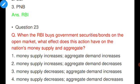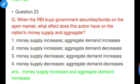Question number twenty-three: When the RBI buys government securities and bonds on the open market, what effect does this have on the nation's money supply and aggregate demand? Options include: money supply increases and aggregate demand increases; money supply increases and aggregate demand decreases; money supply decreases and aggregate demand increases; money supply decreases and aggregate demand decreases. Option one is correct — when RBI buys government securities, it infuses money into circulation, increasing money supply and thereby increasing aggregate demand.